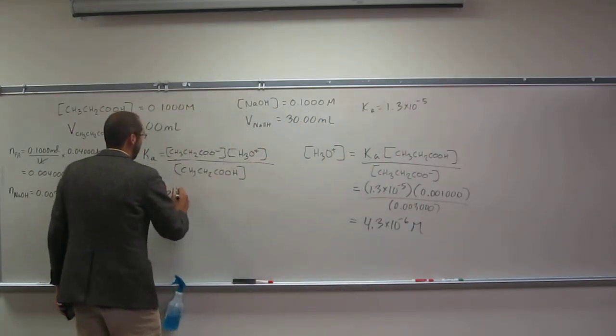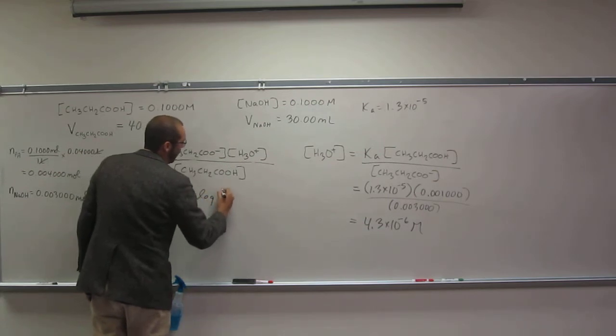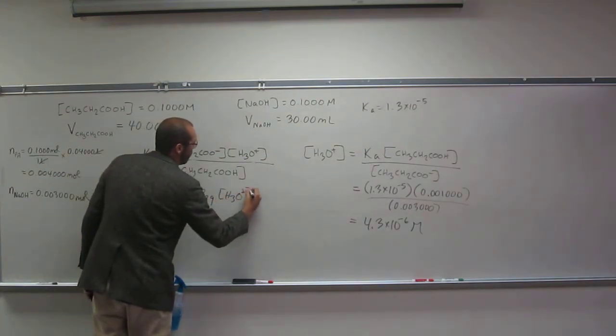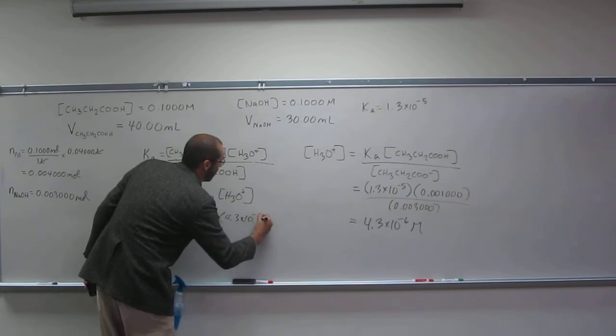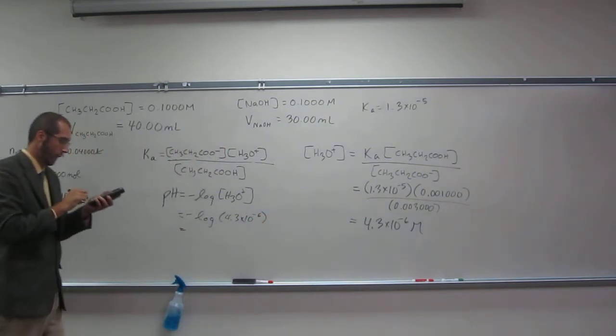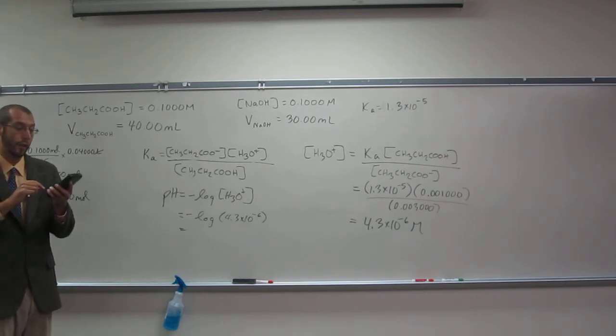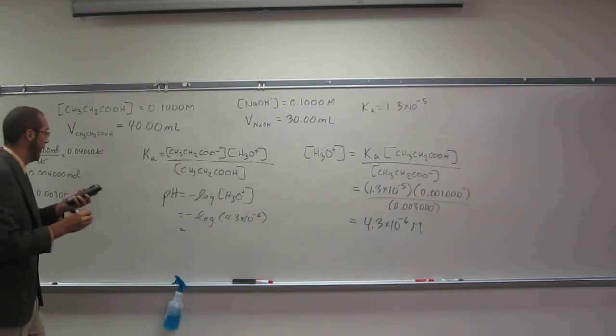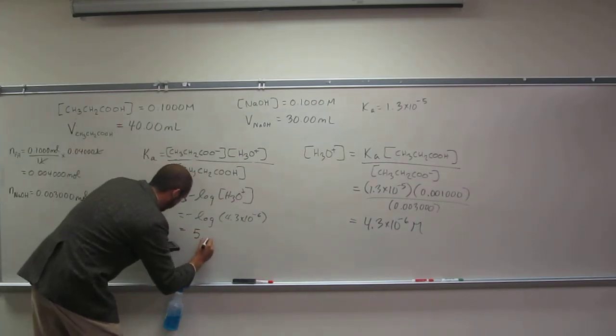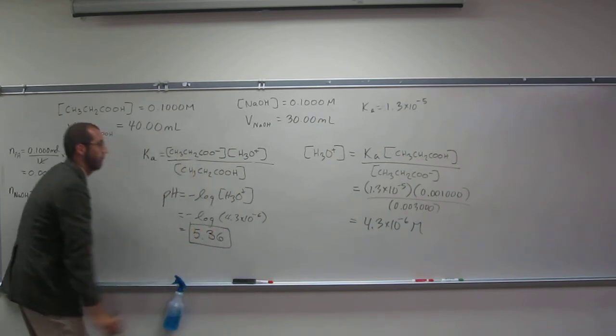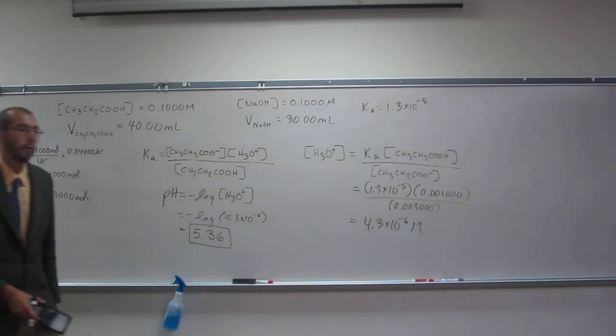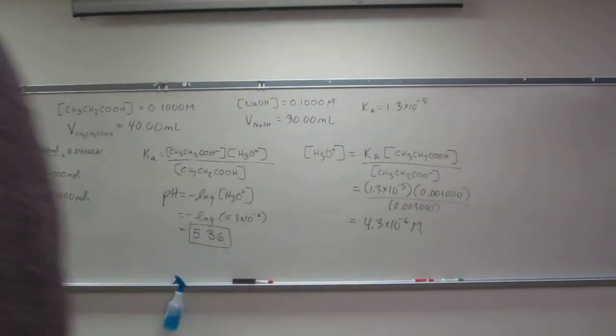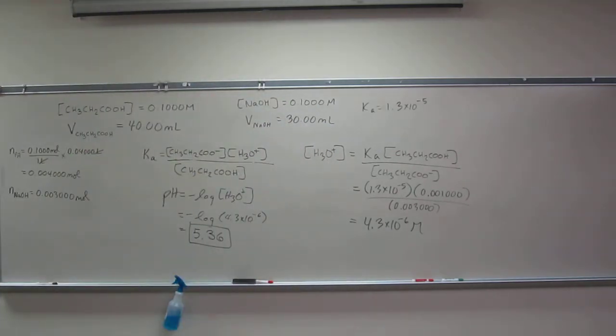So the pH equals the negative log of the H3O plus concentration. So the negative log of 4.3 times 10 to the negative sixth. And I'm just pushing answer in line, so you might get a different pH, like slightly different. So 5.36 pH of this solution. And you would expect it to have gone up because you added NaOH2. Are there any questions about this? Questions, questions? Hold your peace, if no. Okay, wonderful.